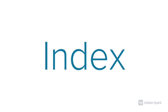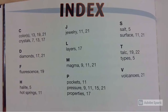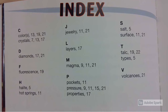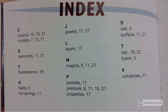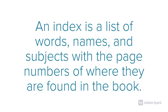Index. What is an index? An index is a list of words, names, and subjects with the page numbers of where they're found in the book.